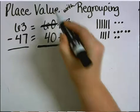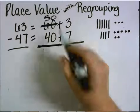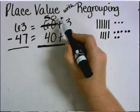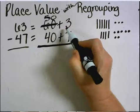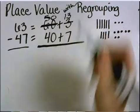I'm going to borrow one group of 10 from the tens place. So I'll cross out the 60 and make a 50. I give that group of 10 to the 3 ones, now makes 13 ones.